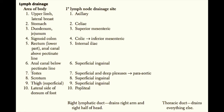For example, the upper limbs and lateral breast drain to axillary lymph nodes. The stomach drains to celiac lymph nodes. The duodenum and jejunum drain to the superior mesenteric lymph nodes. The sigmoid colon drains to the colic and then to the inferior mesenteric lymph nodes. The rectum and anal canal above the pectinate line drain to the internal iliac nodes. The anal canal below the pectinate line drains to the superficial inguinal nodes. The testes drain to superficial and deep plexuses and then to para-aortic nodes. The scrotum and superficial thigh drain to the superficial inguinal nodes, and the lateral side of the dorsum of the foot drains to the popliteal lymph nodes.